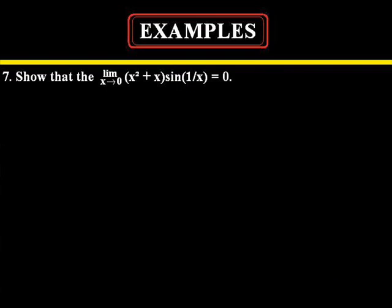Alright so example number seven asks us to show that the limit as x approaches zero of x squared plus x multiplied by sine of one over x is equal to zero. There's a bit of a problem here though. None of the known techniques we've learned so far can help us prove that the limit as x approaches zero for this equation is equal to zero.